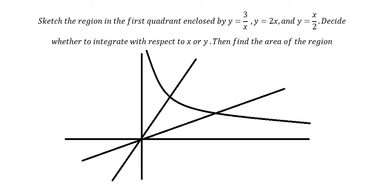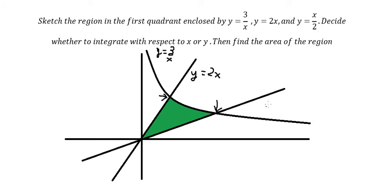The area we need to concentrate on is this one. Now we need to find the intersection points. This curve is y equals 3 over x, this one is y equals 2x, and this one is y equals x over 2.